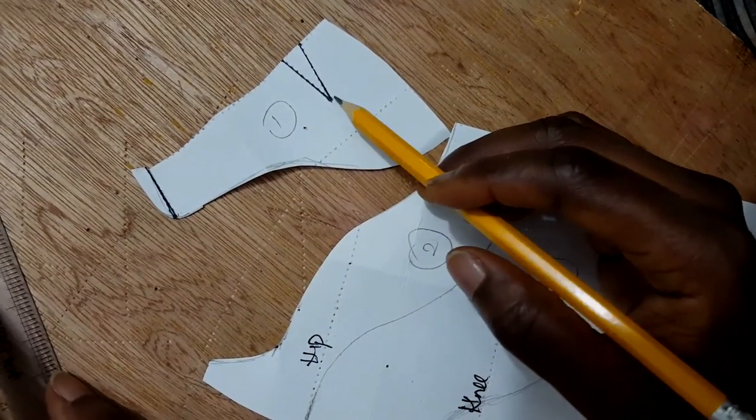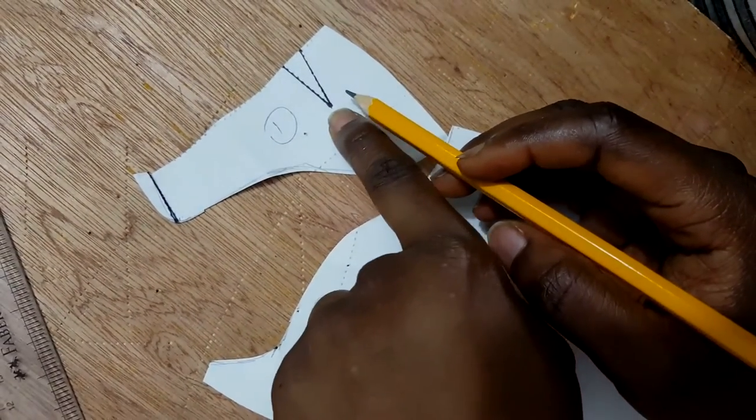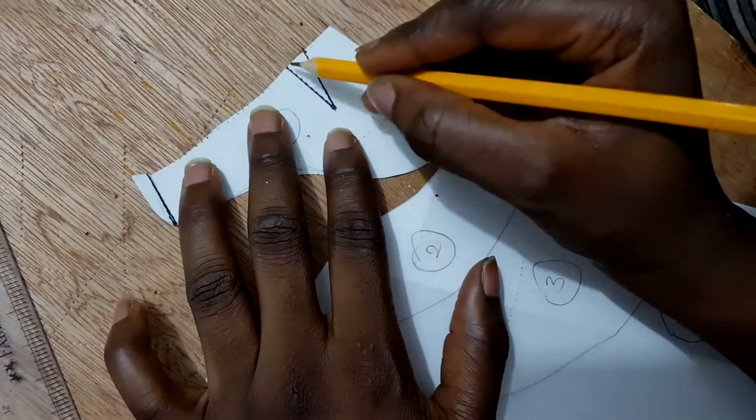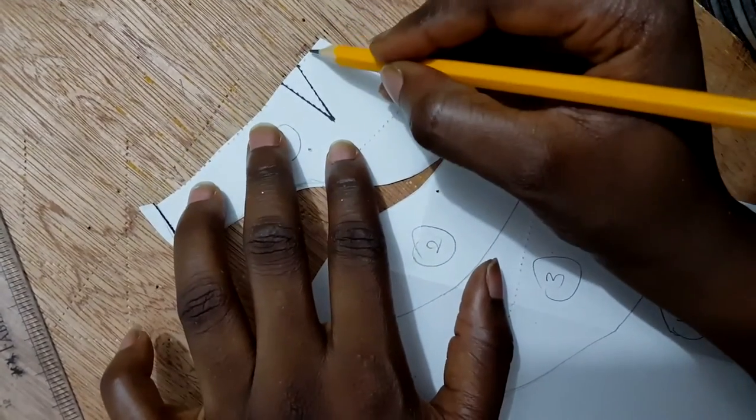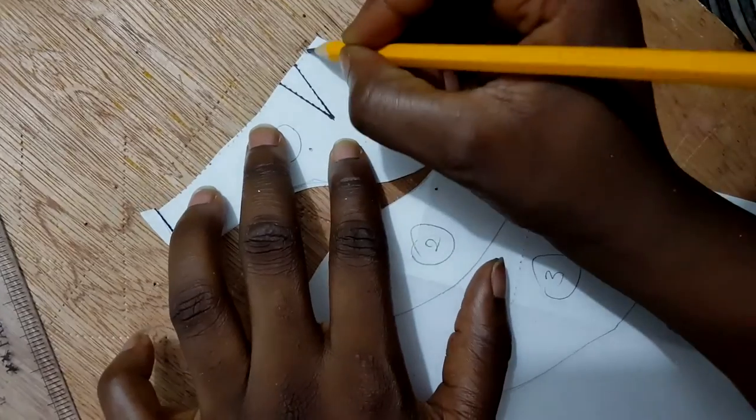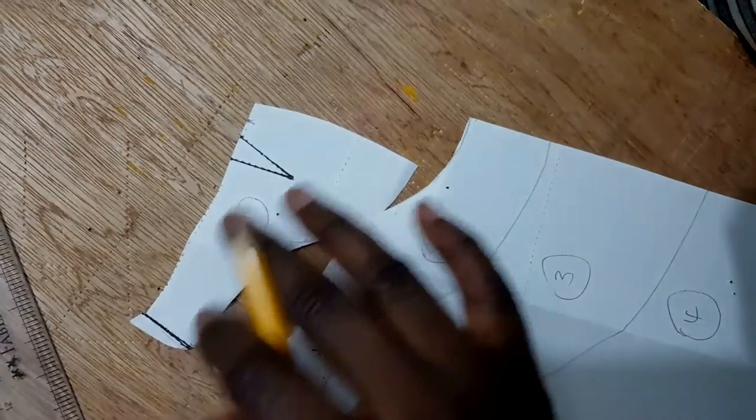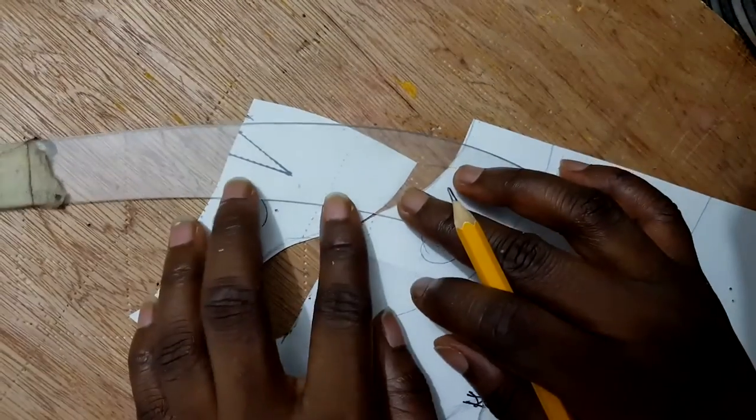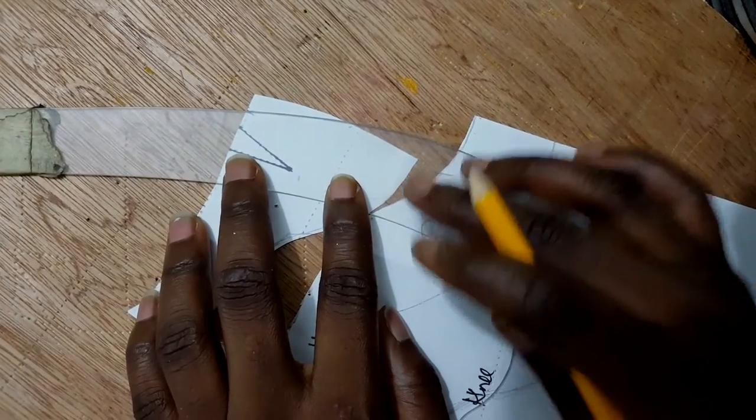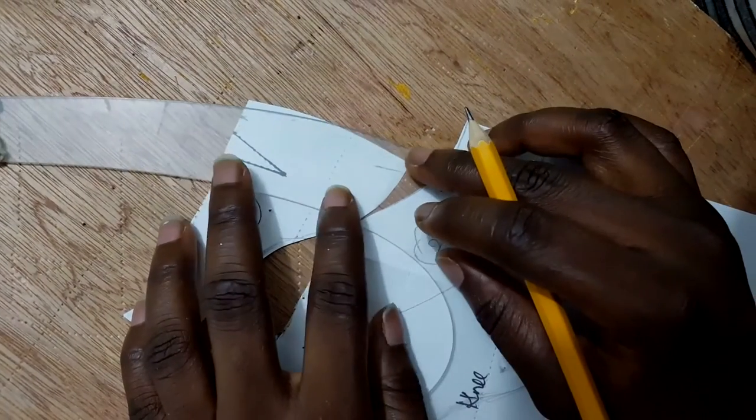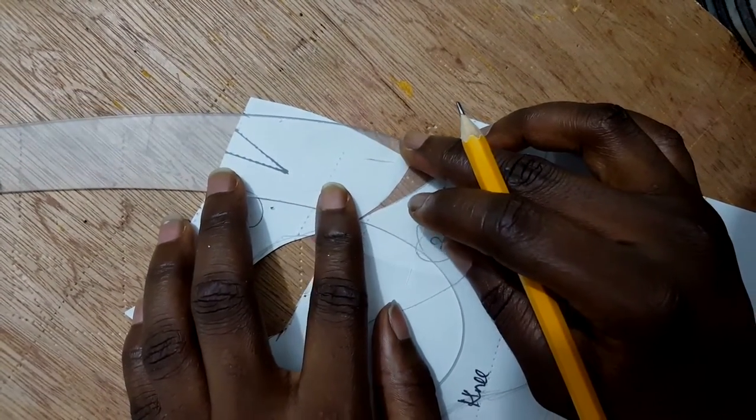But the other dart, you can either hold it like this or just measure what you have on the waist, measure it out, then take it out from the side, depending on the client and the style you're making.